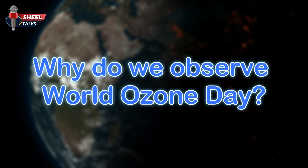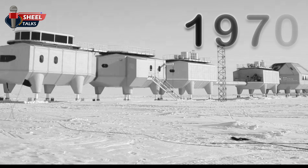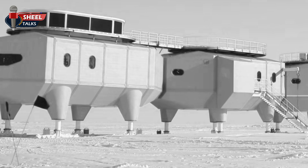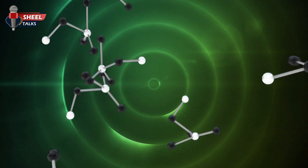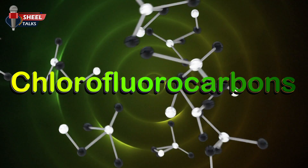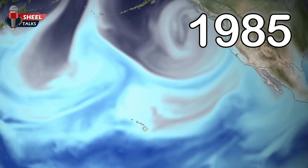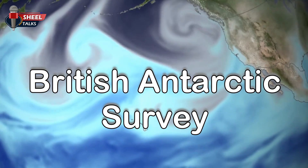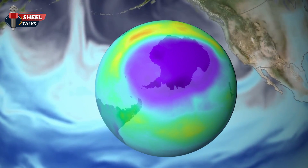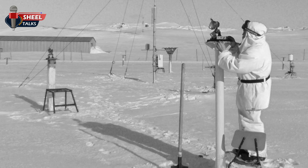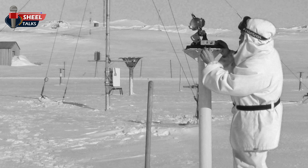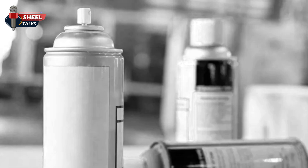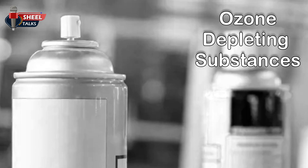Why do we observe World Ozone Day? In 1970, scientists first detected signs of damage to the ozone layer, primarily caused by chemical gases like chlorofluorocarbons. However, in 1985, scientists from the British Antarctic Survey discovered a significant hole in the ozone layer over Antarctica. This discovery led to the initiation of the Montreal Protocol in 1987, aimed at reducing the production and use of ozone depleting substances.